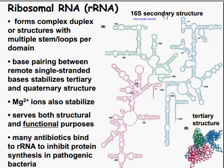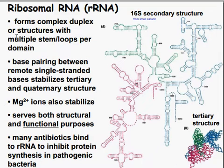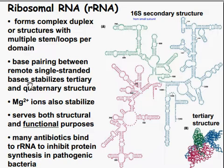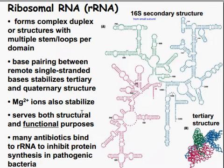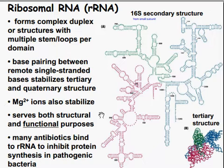The ribosomal rRNA has a 16S secondary structure from the small subunit. It forms a complex structure with multiple stem loops per domain. Base pairing between single-stranded bases stabilizes the tertiary and quaternary structure. Magnesium ions also help with stabilization. It serves both structural and functional purposes. Many antibiotics bind to rRNA to inhibit protein synthesis in pathogenic bacteria.